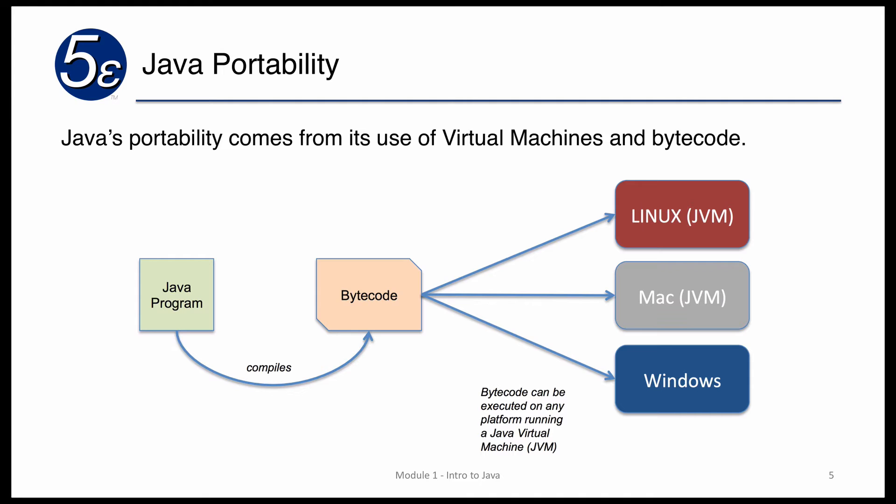When the bytecode is actually executed on a virtual machine — say the Linux virtual machine, the Mac, or the Windows virtual machine — the virtual machine knows how to take that Java code and integrate it with the hardware platform it's running on. So all the specifics of the hardware platform are located on the virtual machines, shown on the right side of the screen.